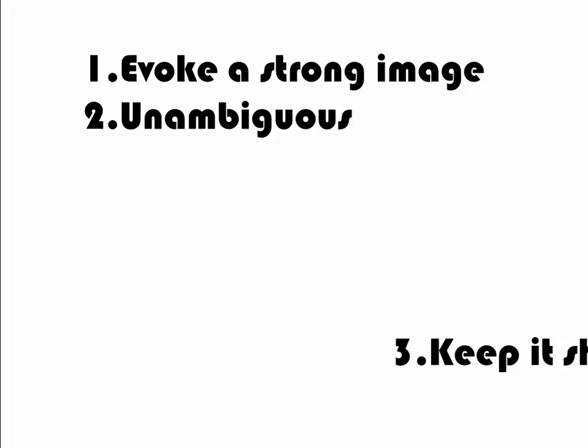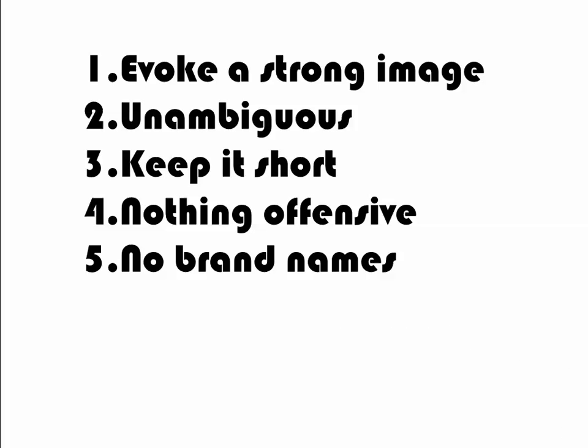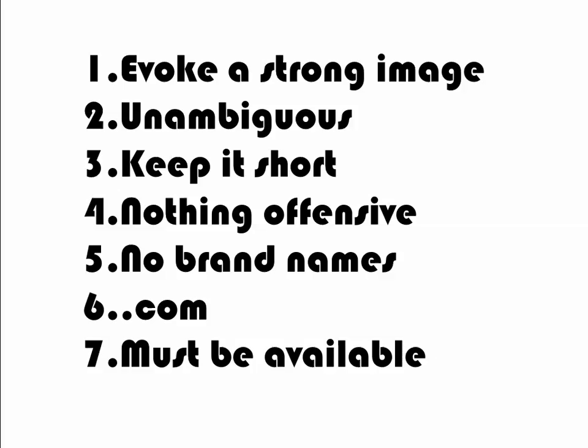Let's look at our seven rules. Must have a strong image. It must be unambiguous — people cannot get it wrong, or it's very hard for them to get it wrong. It's a short name. It's not offensive. It's not a brand name. It ends in .com. And it's got to be available. So there are your seven rules. Go find some domain names and leave them as a comment here on the blog, and we'll pick the winner this week.